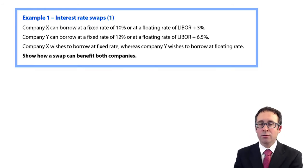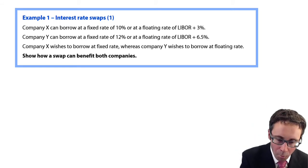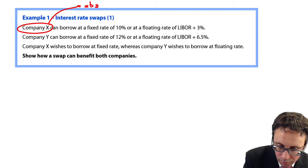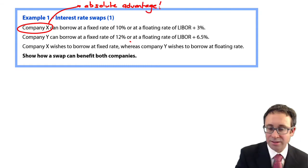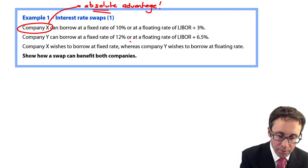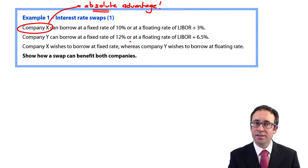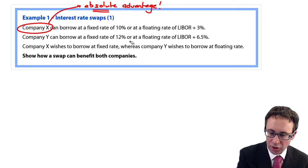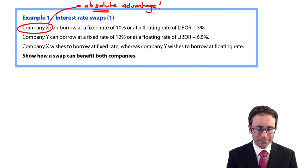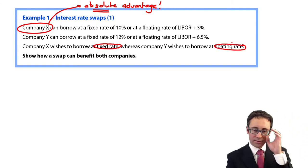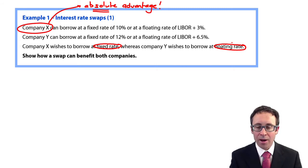Company X can borrow in both markets more cheaply than Company Y, so Company X has what is known as an absolute advantage — it has advantage in both markets. If it were only able to borrow more cheaply in one of the markets, then it would be a comparative advantage. But here we have absolute advantage — could be a small multiple choice style question. Company X wishes to borrow at a fixed rate, and Company Y wishes to borrow at a floating rate.